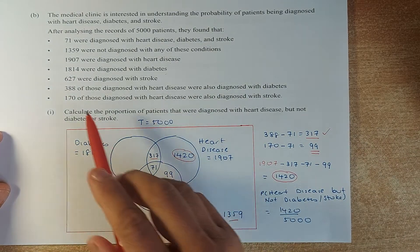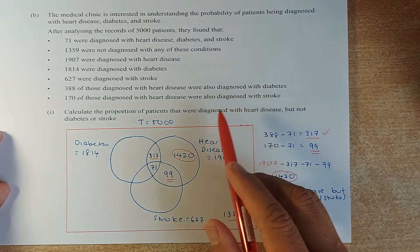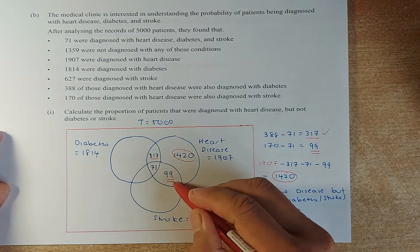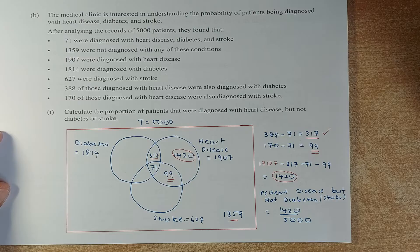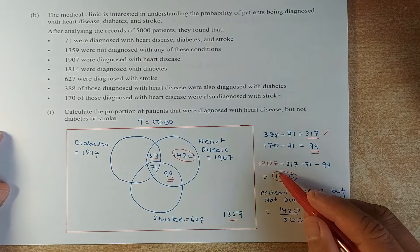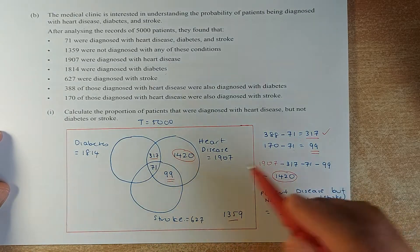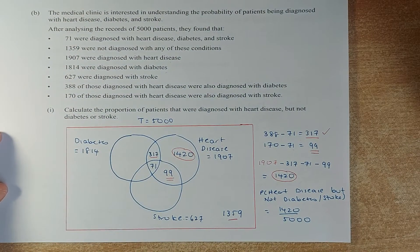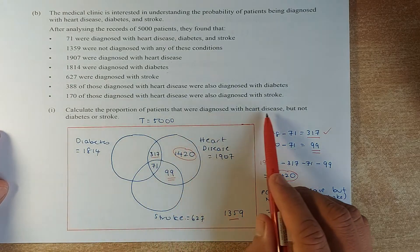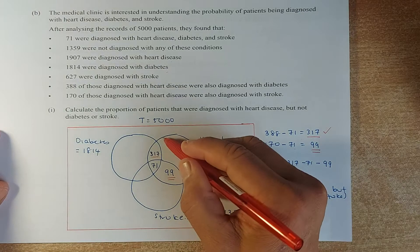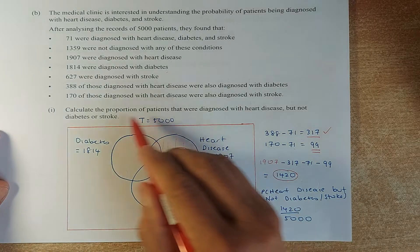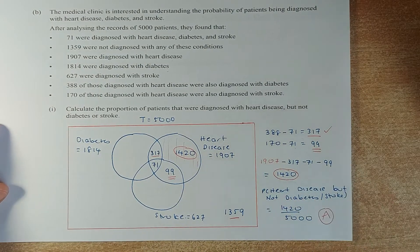To find the heart disease only region: take the total 1,907 minus the three overlap regions, and you get 1,420. Once you have done this, you are able to answer the question. Calculate the proportion of patients that were diagnosed with heart disease but not diabetes and not stroke. You are only looking at that region, so the answer is 1,420 out of 5,000, and that will give you an easy achieve.